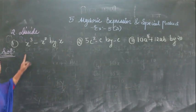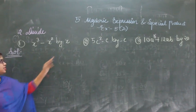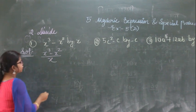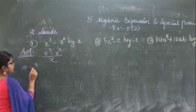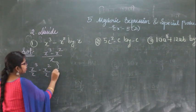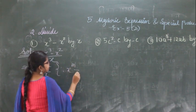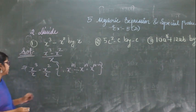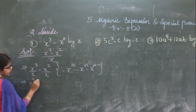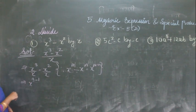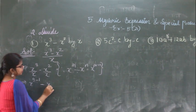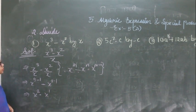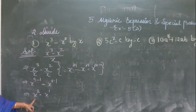The next question is x cubed minus x squared divided by x. Split this as x cubed divided by x minus x squared divided by x. Applying the exponent formula, x cubed divided by x gives x to the power 3 minus 1, which is x squared. And x squared divided by x gives x to the power 2 minus 1, which is x to the power 1. So the answer is x squared minus x.